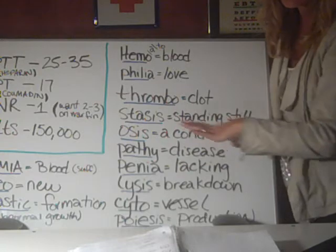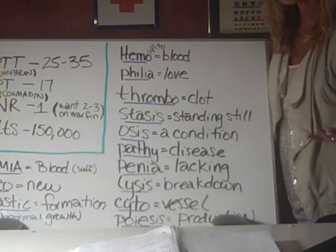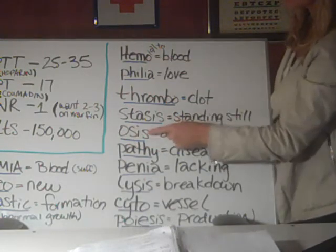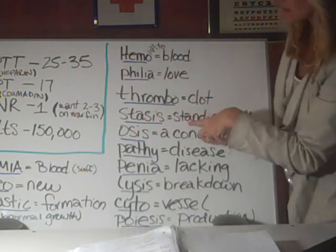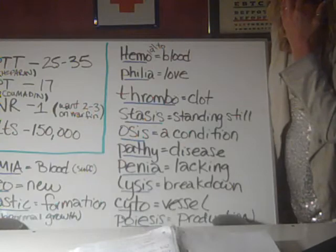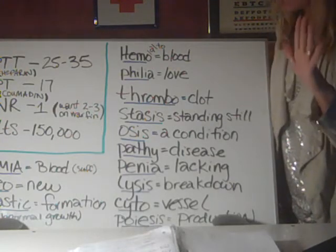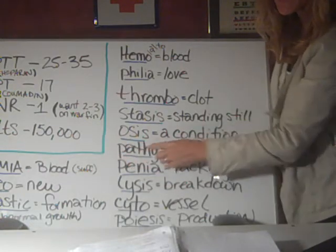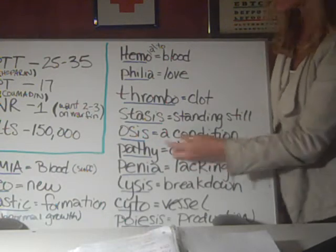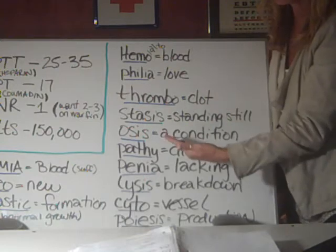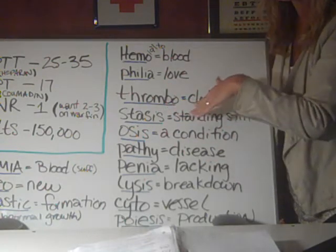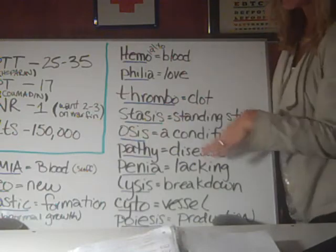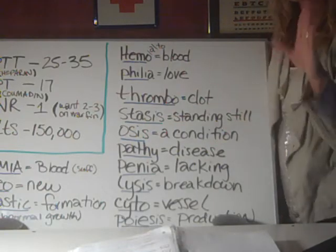O-S-I-S means a condition. It does not necessarily mean a bad condition — it's just a condition. The suffix pathy — P-A-T-H-Y — means a disease. So osis can just be a condition; it might be a disease but it might just be a state. Pathy is always a disease condition — if you see the suffix pathy, that is an abnormality one hundred percent of the time.